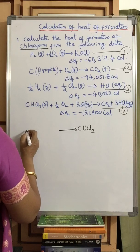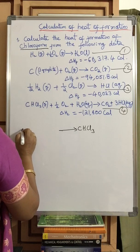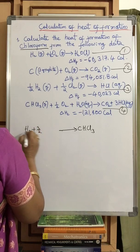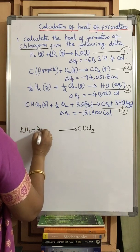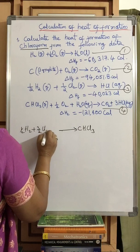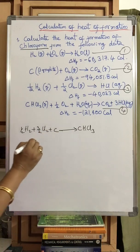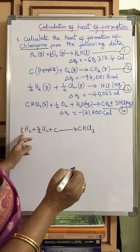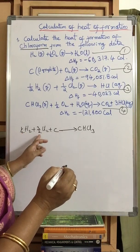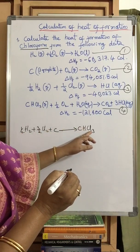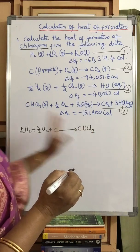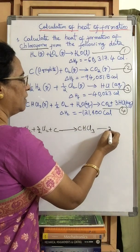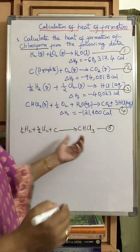What is the equation you can write here? That is half H2 plus 3 by 2 Cl2 plus C gives CHCl3. That is 1H, 3Cl and 1C. So this is the heat of formation equation for the chloroform.